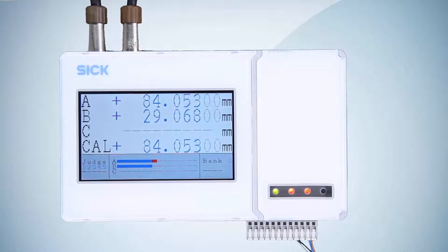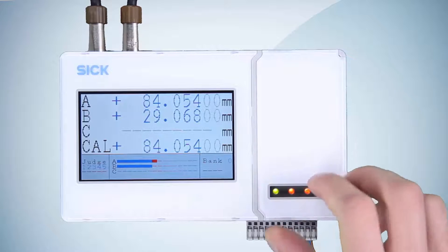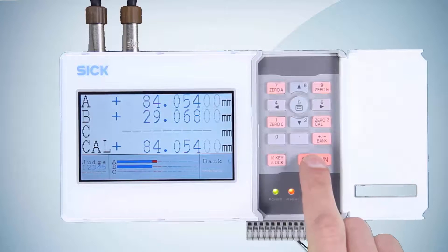Now we come to making the settings for thickness measurement on the device. Please check that the device is set to the factory settings and carry out a reset if necessary. To access the menu, press the Set Run pushbutton once.